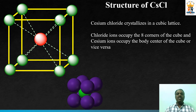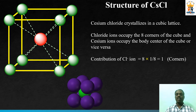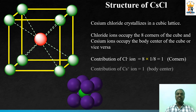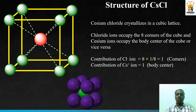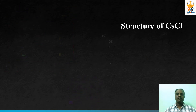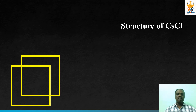This is the 3D image of CsCl. To calculate the contribution of ions: the chloride ion occupies the eight corners, and each corner is shared by eight other unit cells, so the contribution of the chloride ion is 1/8 × 8 = 1. The body center is not shared by any other unit cell and contributes fully to that unit cell, so the contribution of the Cs⁺ ion is also 1. Therefore, there is 1 Cs⁺ and 1 Cl⁻ ion per unit cell of CsCl.